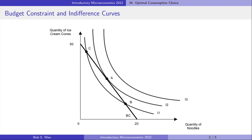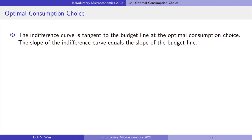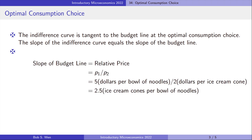At point A, the slope of the indifference curve is the same as the slope of the budget line. That means the marginal rate of substitution is equal to the relative price of the two goods. We say that the indifference curve is tangent to the budget constraint. In our example, the relative price of noodles in terms of ice cream is 5 divided by 2, that is 2.5 ice cream cones per bowl of noodles.